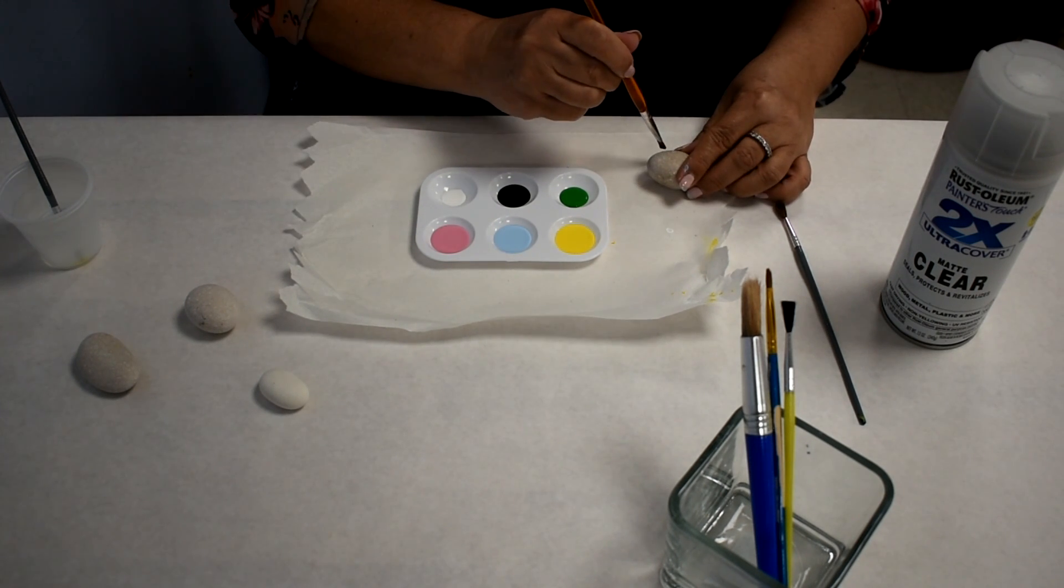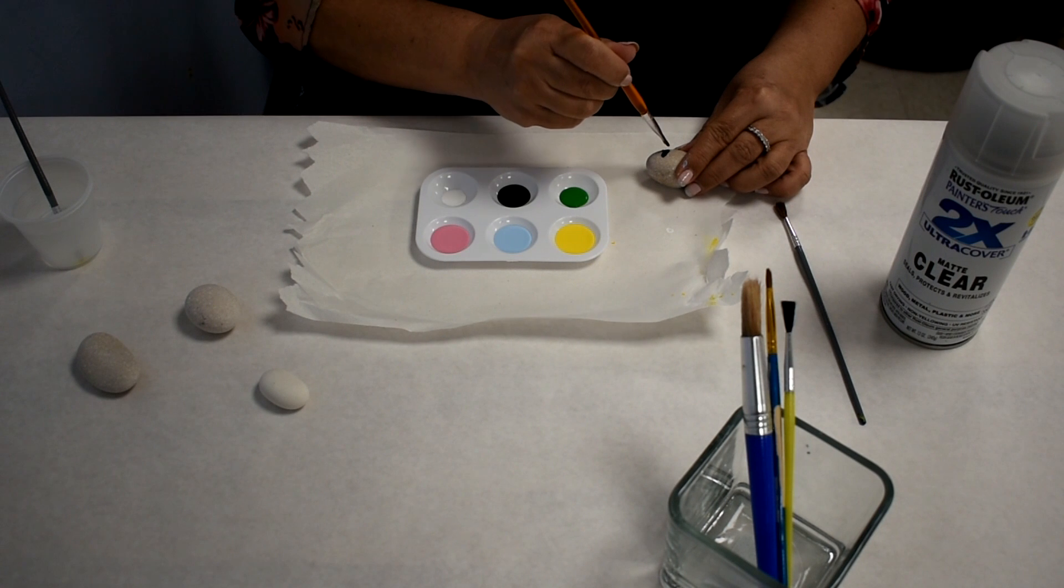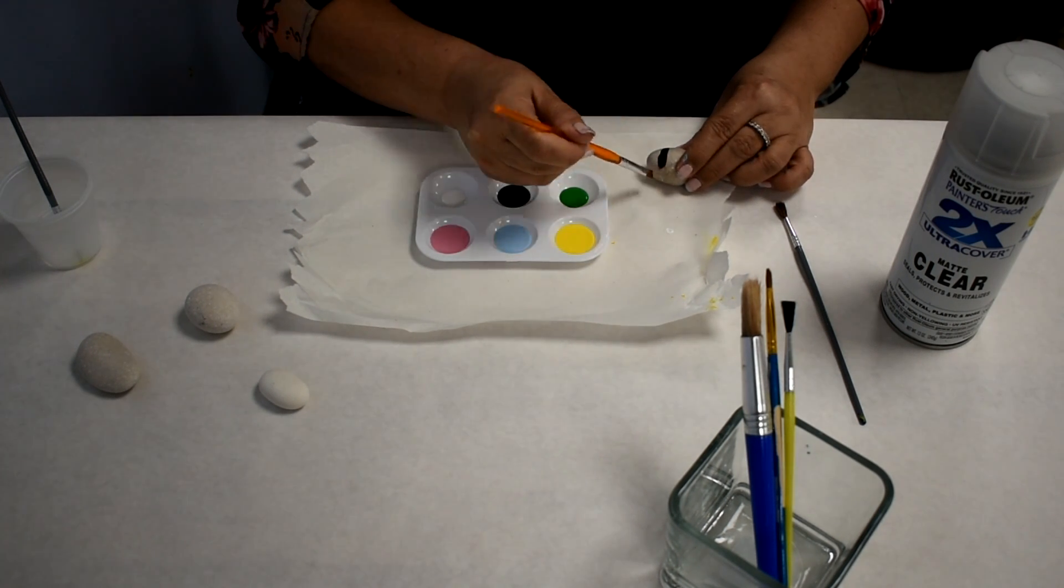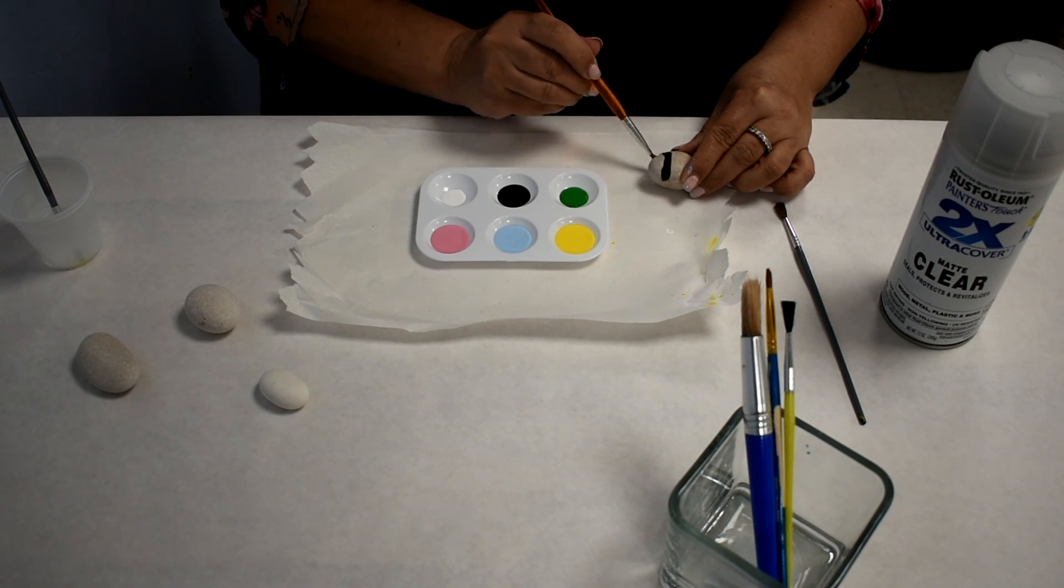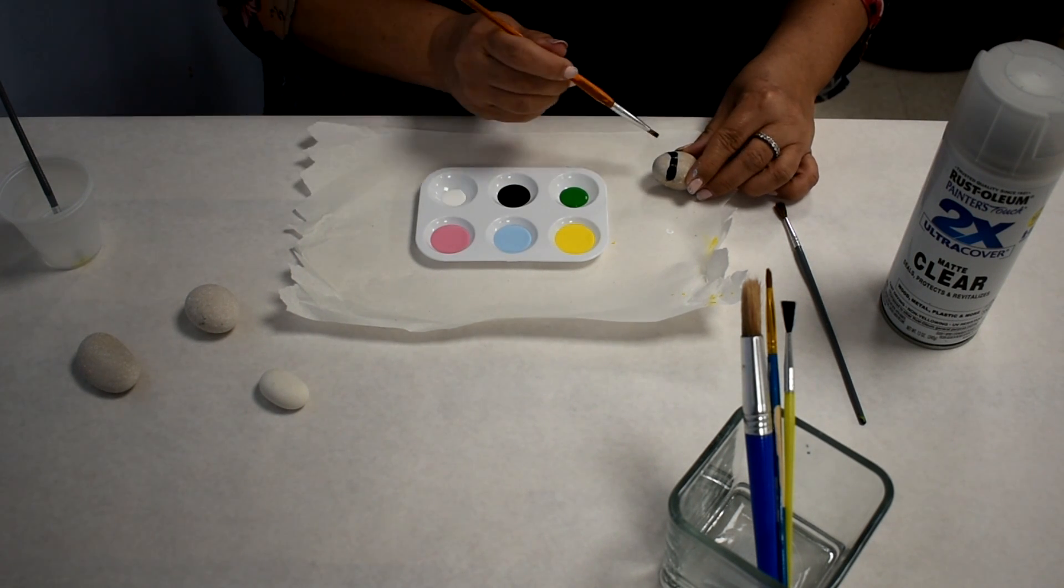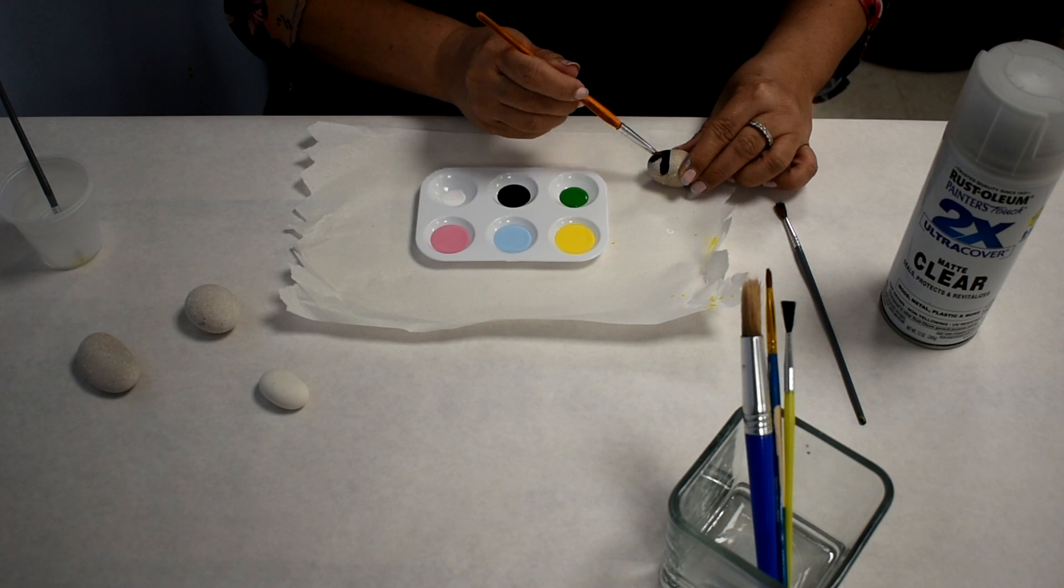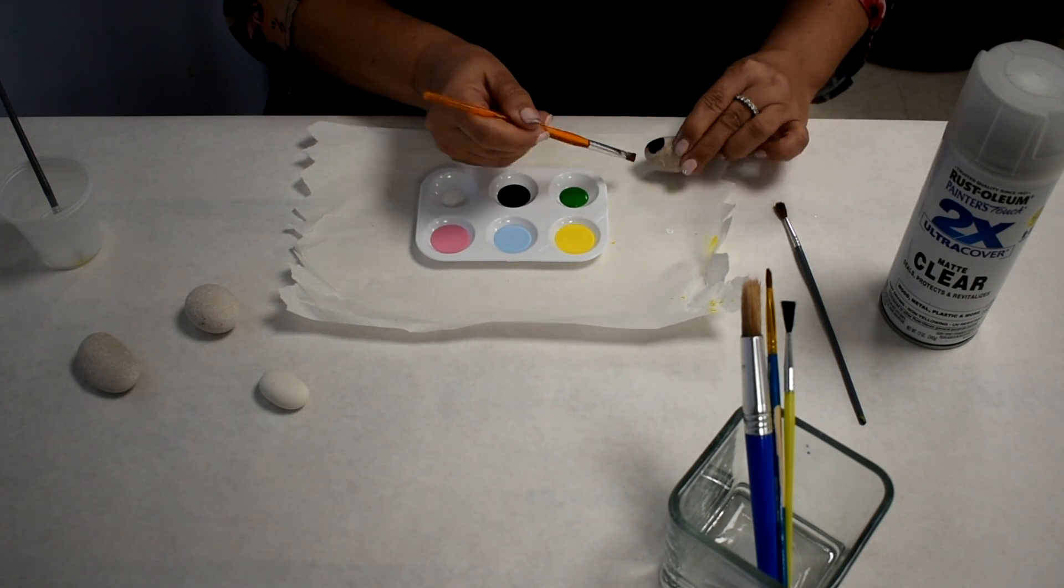Start by tracing the rocks with pencil or toothpick where you want the face to be. Paint the first coat. I did all the black painting first for all the rocks.